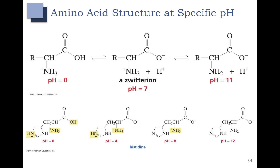Here's another example: histidine. Histidine is neat because it has three acidic hydrogens to worry about. At a low pH of 0, all three are protonated. As we increase the pH, the most acidic — the carboxylic acid — deprotonates first, forming the carboxylate. At a pH of 4, the most acidic hydrogen has come off. Increasing pH further, the next most acidic hydrogen on the R group comes off. At a pH of 12, we have the fully deprotonated molecule — both amines are in the free amine form and the carboxylic acid has been deprotonated to form the carboxylate.